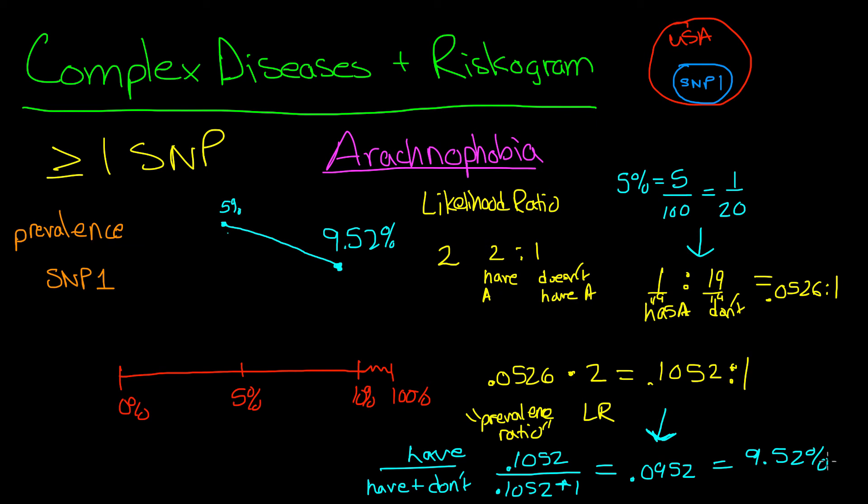To do a quick check of our work, we started with a likelihood ratio of 2 to 1. Looking at people with SNP1, there are twice as many with arachnophobia as without. Clearly SNP1 increases a person's risk for spider fear. Our answer of about 9% makes sense because it's higher than the 5% we started with. By having SNP1, these people have an increased risk for spider fear. But what if there's another SNP involved, like SNP2? We're going to examine that question in the next video.